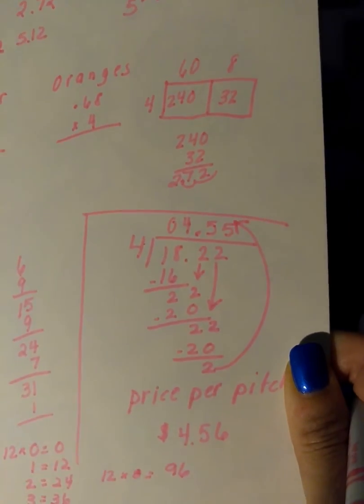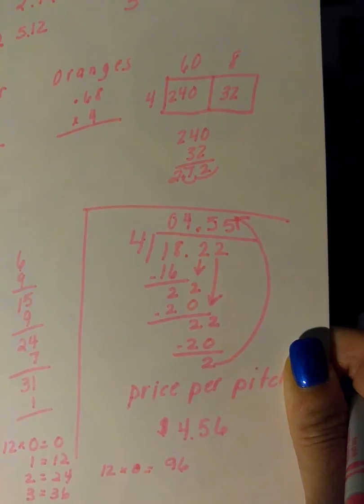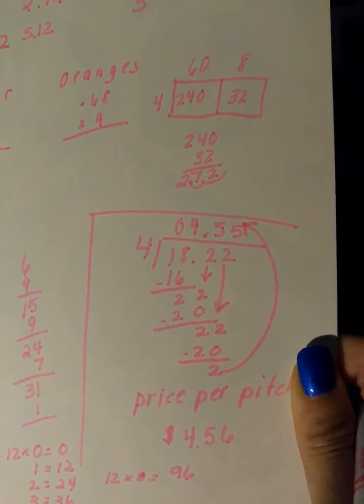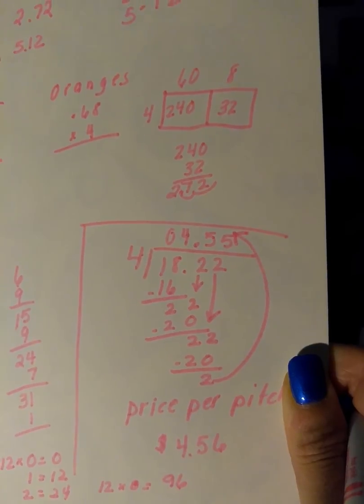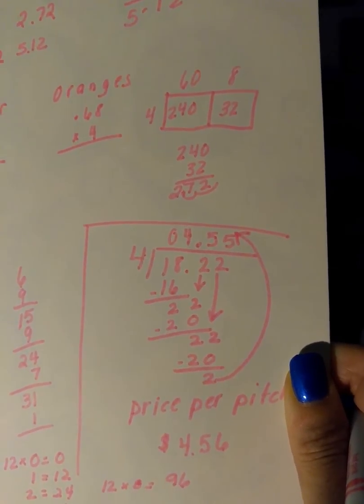Over here is step number 3. This is how I solve for the price per pitcher. I take my total cost, $18.22 for consumable items, divide it by 4.